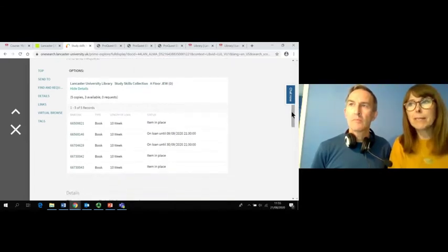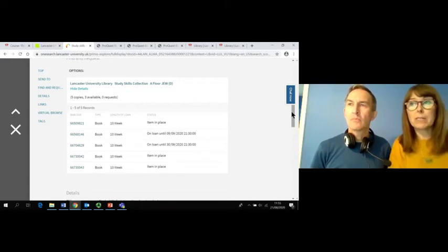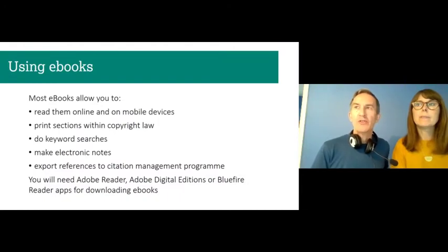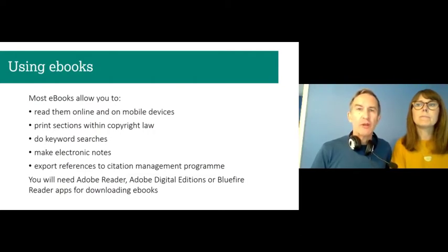The class mark system might seem quite complex at first, so please ask for help if you need it. Our call to action for OneSearch is for you to log in, search for a topic that you're interested in, and open an e-book. Most e-books allow you to read them online and on mobile devices, print sections off within copyright law, do keyword searches within the text, make electronic notes and export references to reference software.